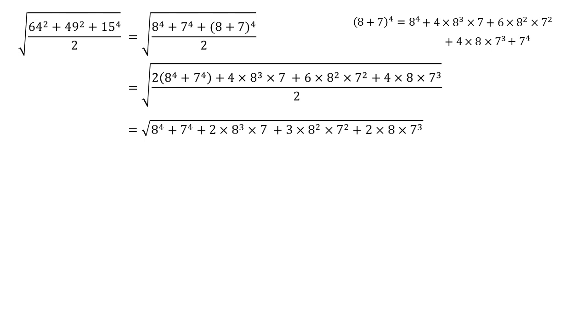We now want to try and reduce those powers at the front there, those powers of 4. We can see that if we were to compare this to the square of 8 squared plus 7 squared, we would get an 8 to the 4 and a 7 to the 4 out of that, as well as a 2 times 8 squared times 7 squared. So we can replace our 8 to the 4 plus 7 to the 4 with the square of 8 squared plus 7 squared minus 2 times 8 squared times 7 squared.